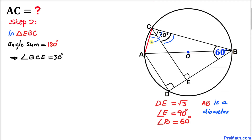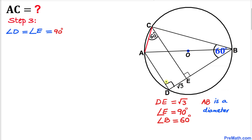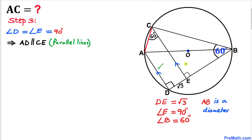We know that angle ACE turns out to be 60 degrees. And since angle D and angle E are both 90 degrees each, these line segments AD and CE are parallel to each other.